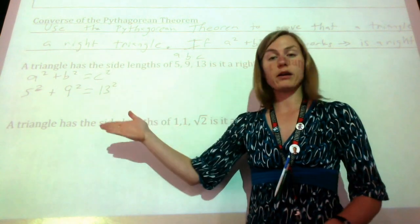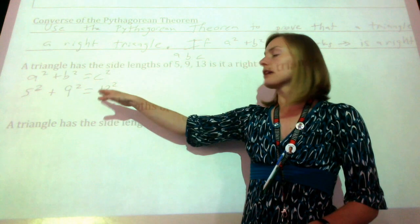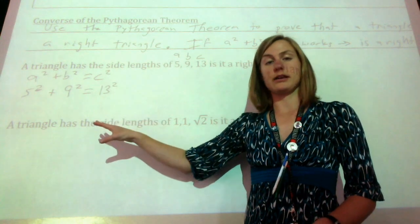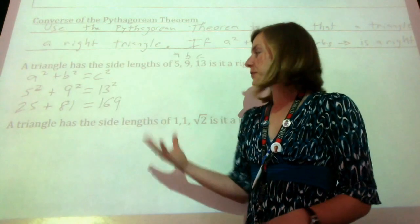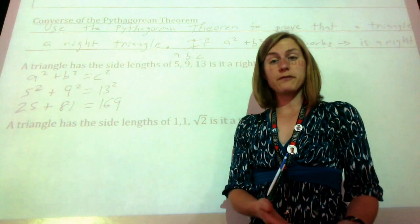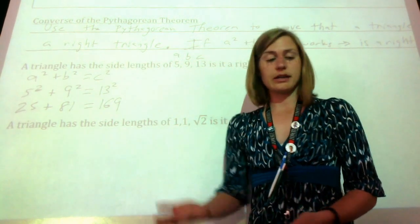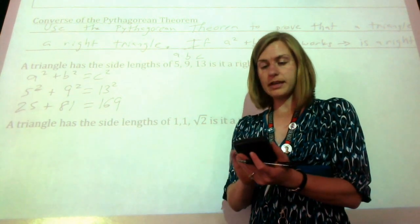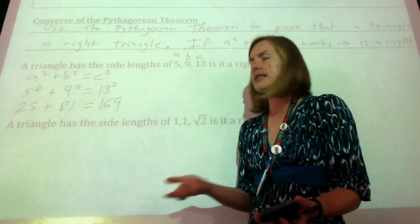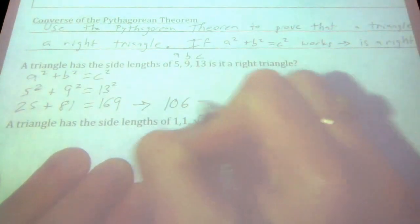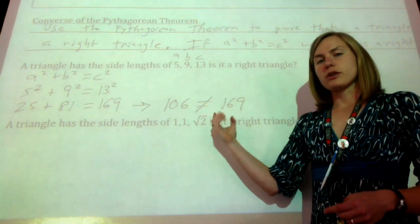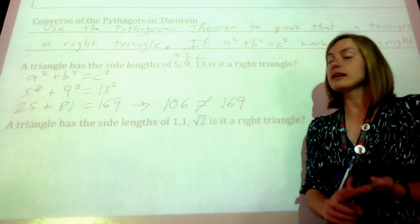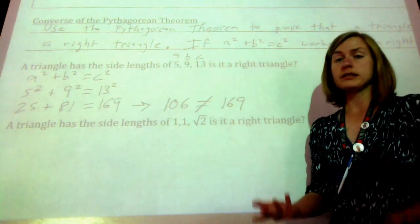Let's square all these numbers: 5 squared is 25, 9 squared is 81, and 13 squared is 169. Now we just need to see if this is really true. Does 25 plus 81 equal 169? Use your calculator if needed. 25 plus 81 is 106 — that's not 169. So this doesn't work, meaning this triangle with measurements 5, 9, and 13 is not a right triangle. It could still be a triangle, but it's not a right triangle.